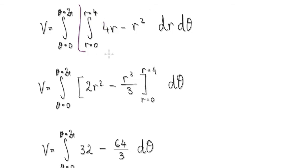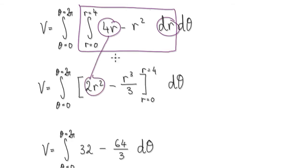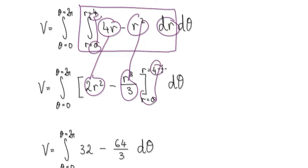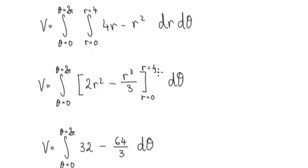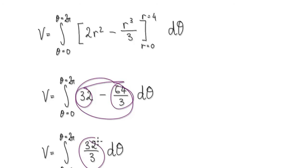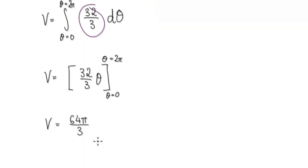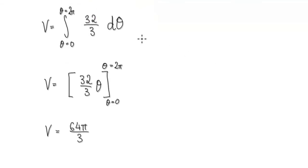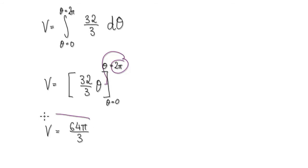So integrate this with respect to r from 0 to 4. That will then take us to here. Merge these two together and it will give you this. Now integrate it with respect to theta, from 0 to 2 pi. So integrating this with respect to theta will then give you this. Put 2 pi into here — it will give you a volume of this.